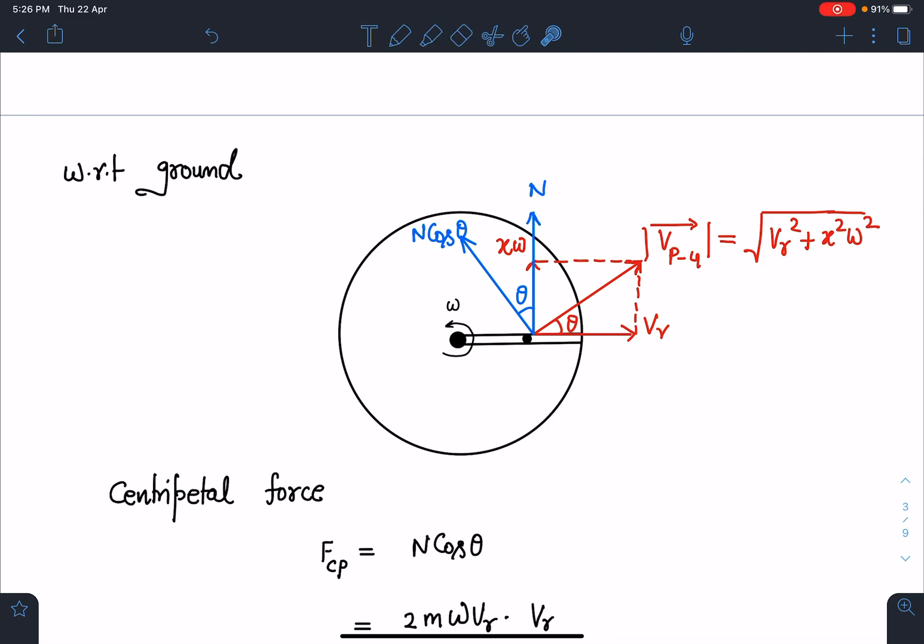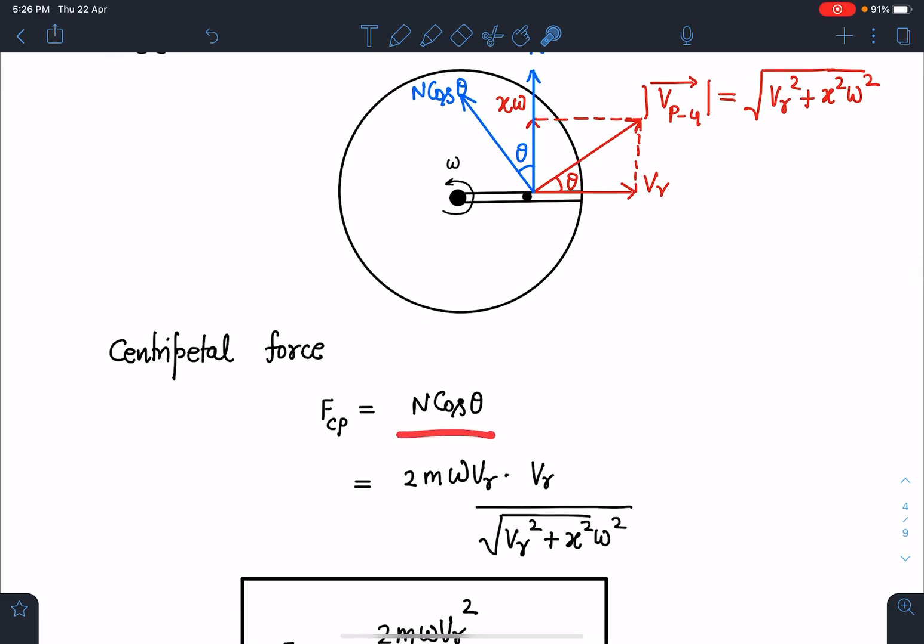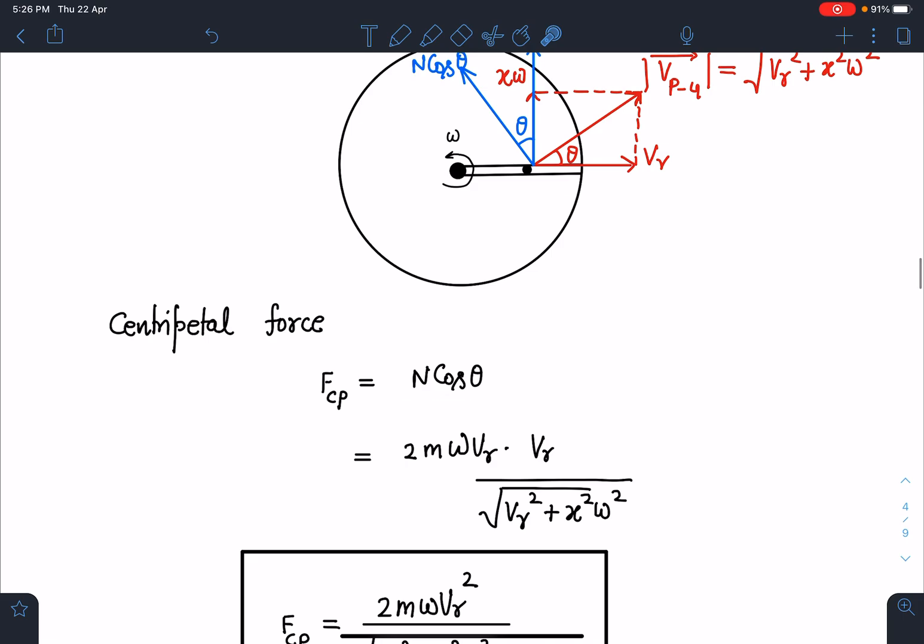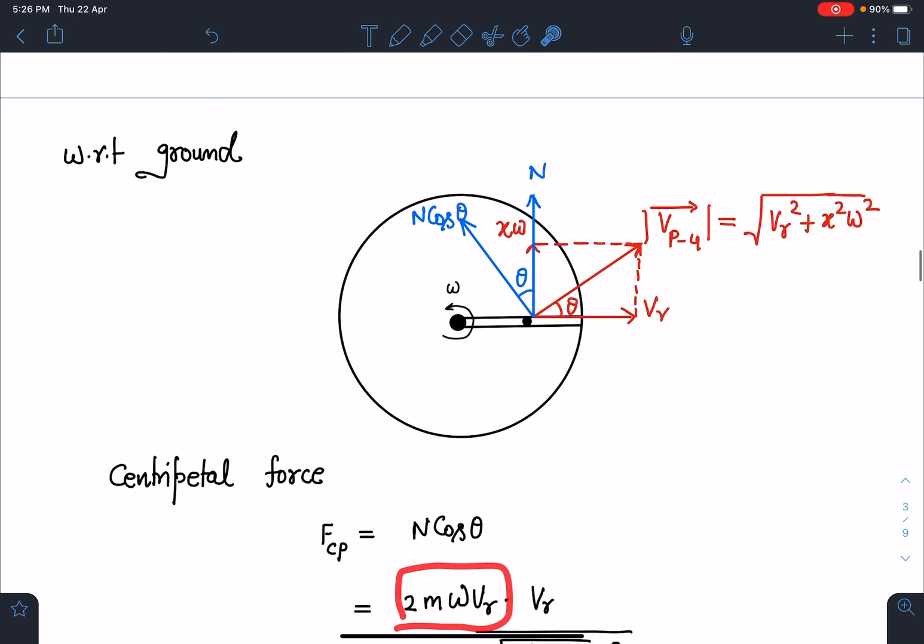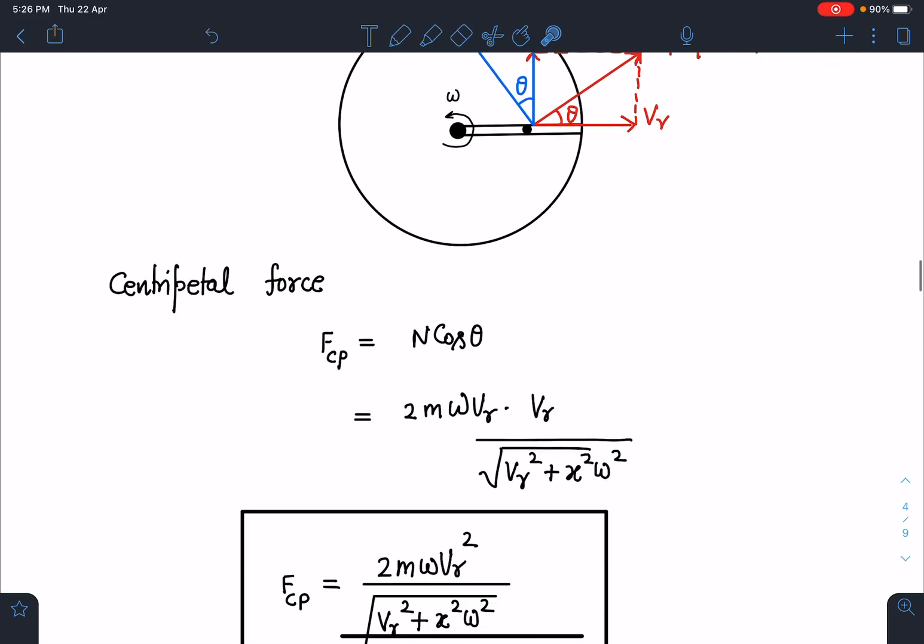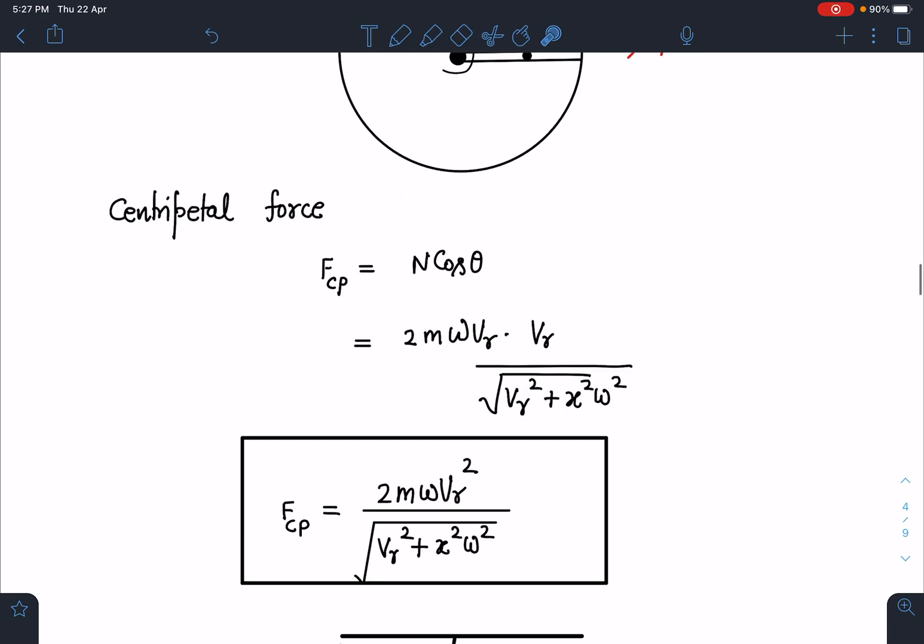This normal reaction is acting here and component of normal reaction perpendicular to the net velocity with respect to ground is going to be our centripetal force. So you can say this is N cos theta, so centripetal force is N cos theta here. N value we have calculated in the previous part, that is 2m omega vr. If I substitute that value, cos theta I can find from here. If this angle is theta here I can write cos theta as vr divided by root of vr square plus x square omega square. When I substitute these values I am going to get centripetal force which is 2m omega vr square divided by root of vr square plus x square omega square.